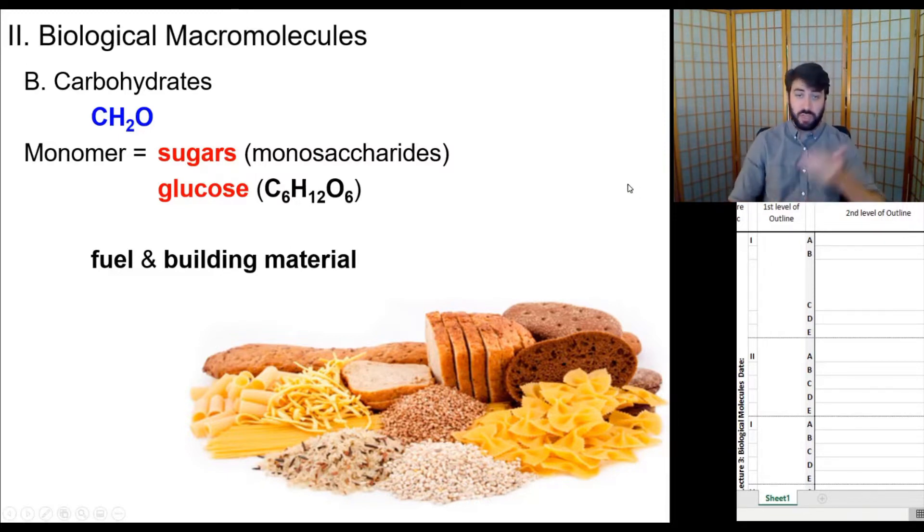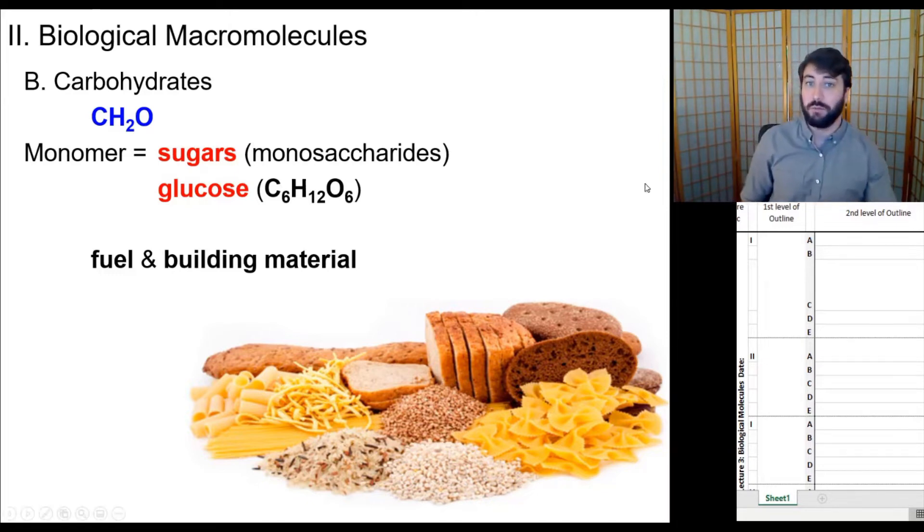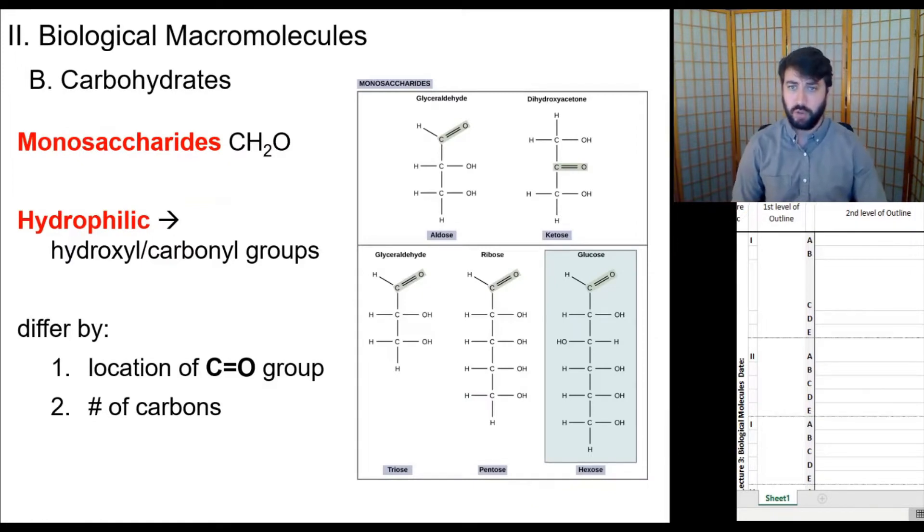The most famous, at least in terms of biology and general biology, is of course glucose C6H12O6, which is one of the outputs of photosynthesis and the major input of cellular respiration. We're going to see a lot more glucose later on. Notice here, there's that same ratio of one carbon to two hydrogen to one oxygen.